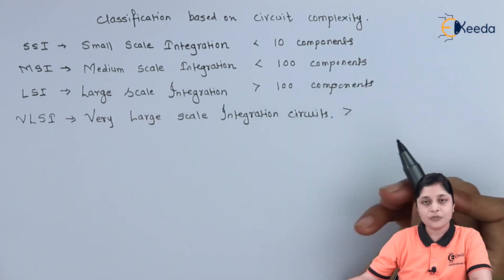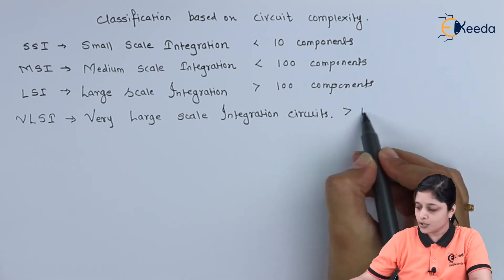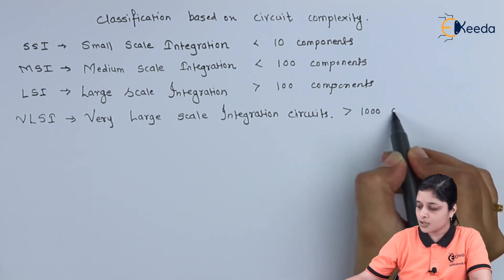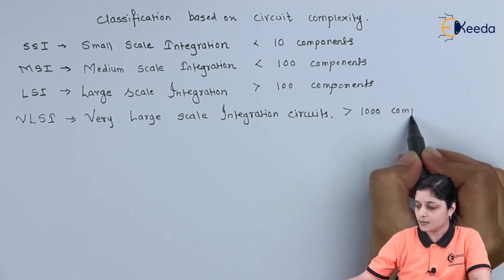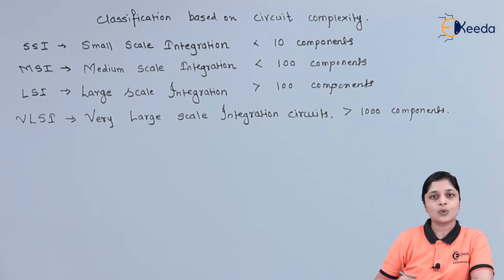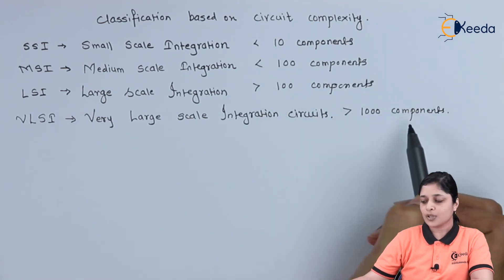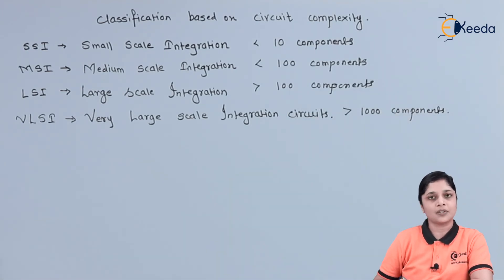And in VLSI technology, more than 1000 components are present on a chip. So these are the number of components used while designing the circuits.